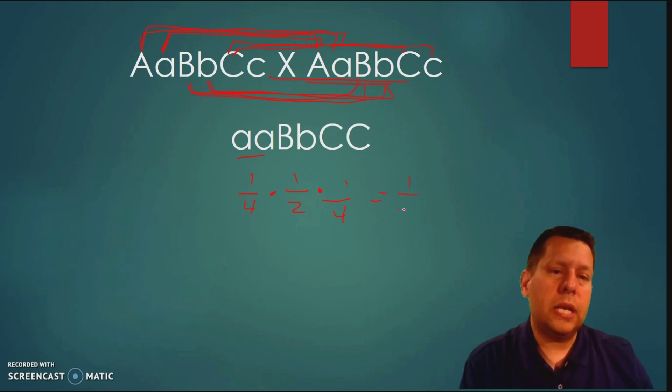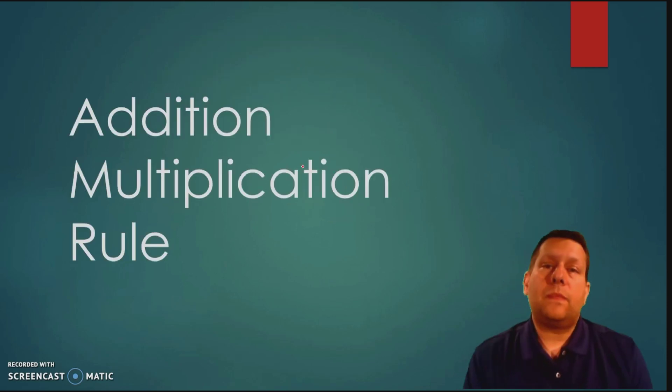So this is a one and thirty two chance of producing that offspring. And that's how you solve genetics problems where you're asked for multiple traits at once and asked to figure out the probability of a genotype for the offspring. That's the addition multiplication rule.